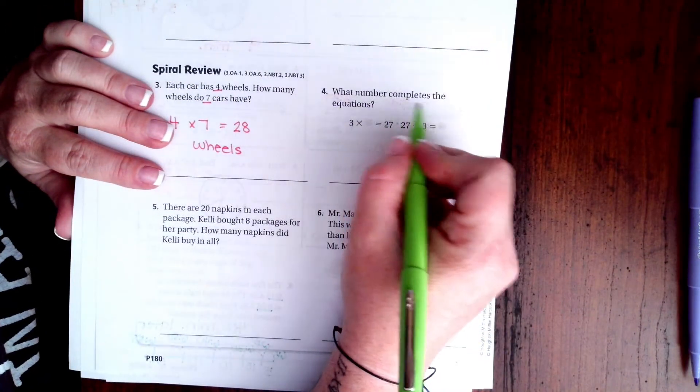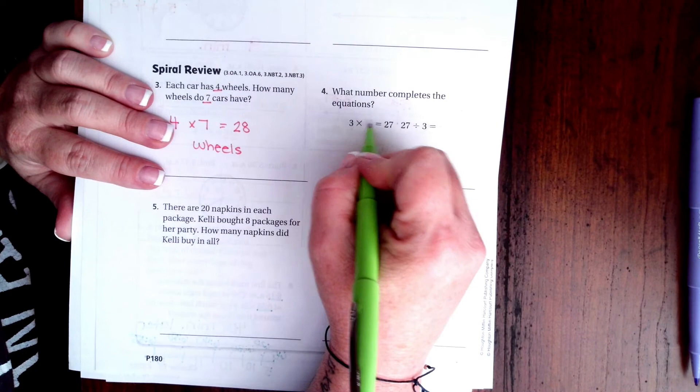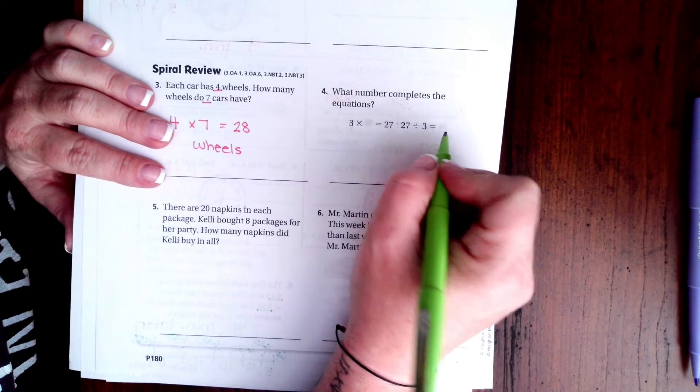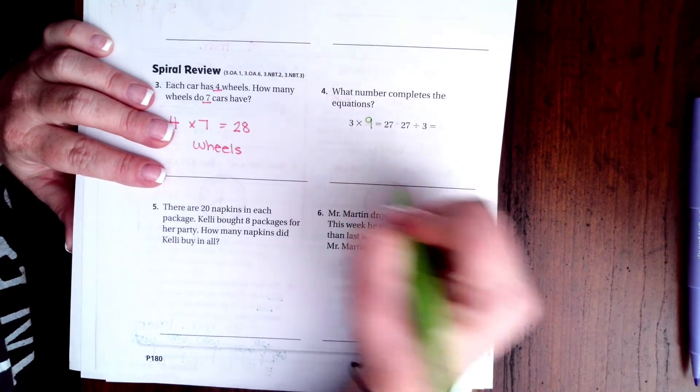What number completes the equation? Well three times what is 27, or 27 divided by 3 is what? Well 3 times 9 is 27.